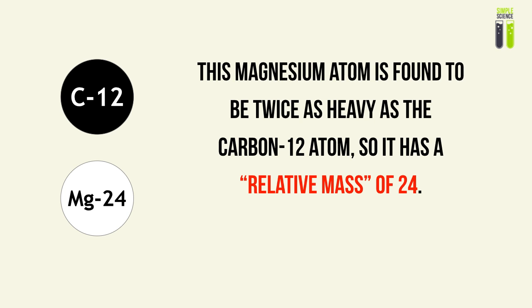Other elements, for particular isotopes — such as the magnesium-24 isotope — are given a relative mass because of how they compare to carbon-12. This particular isotope of magnesium is discovered to be twice as heavy as the carbon-12 atom. Since carbon-12 has a standard mass of exactly 12 units, magnesium-24 has a relative mass of 24, because 12 times 2 equals 24.